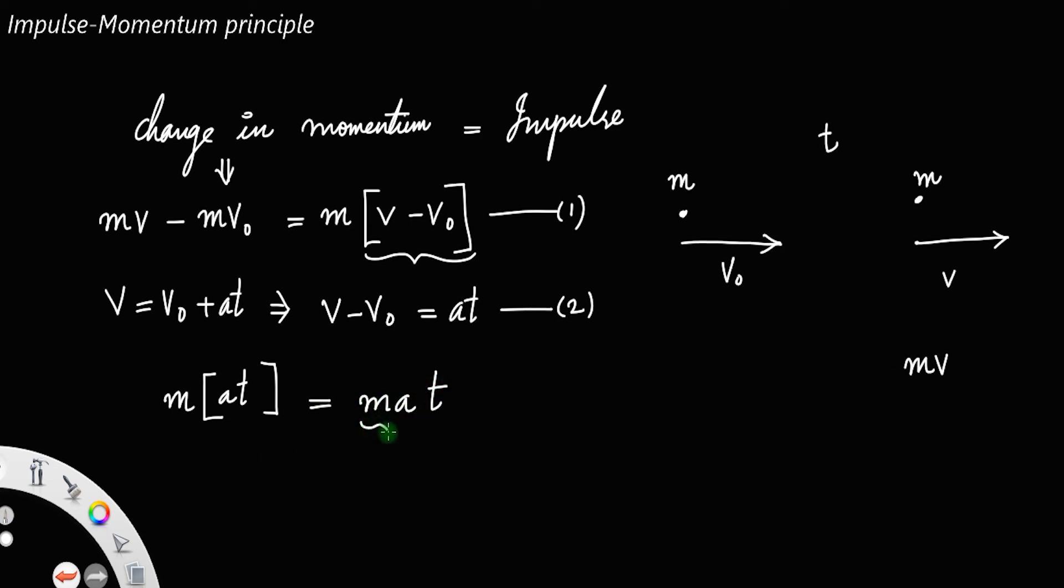The quantity mass times the acceleration of the body gives the force acting on the body. So, force into time, and this force into time, the physical quantity which is equal to force into time is the impulse. So, change in momentum of a body is equal to the impulse. This is the way we prove the impulse momentum principle.